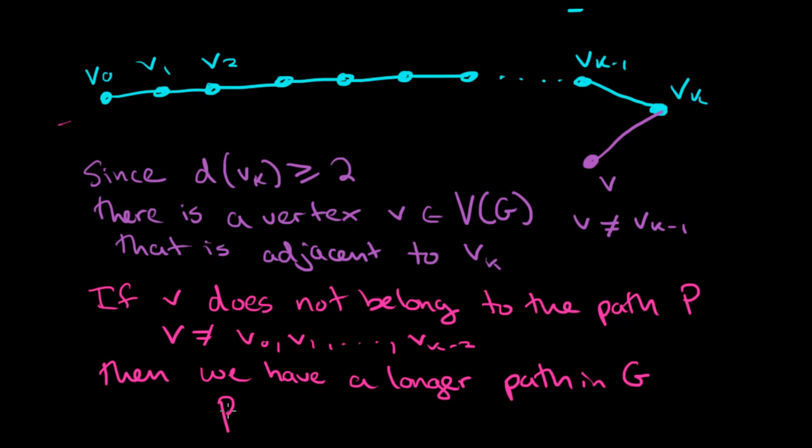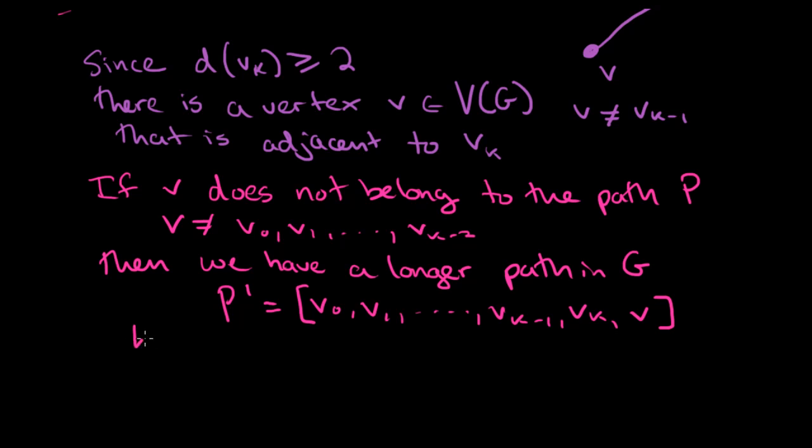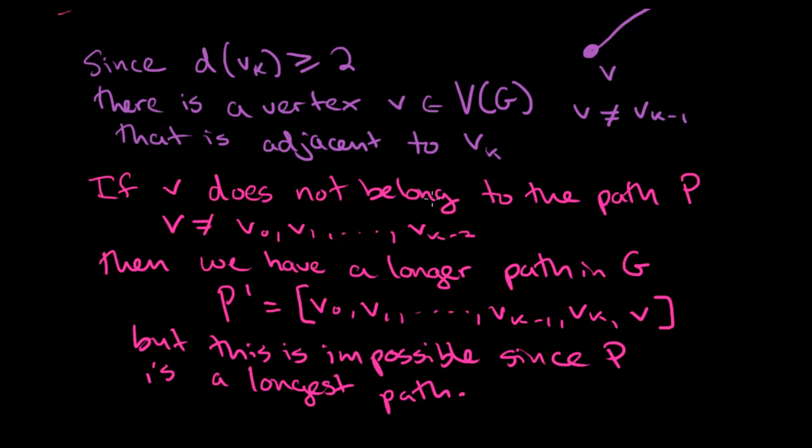Namely, let's call this path P prime. It's the path that goes from V0, V1, all the way up to Vk minus 1, Vk, and then to V. And that is a longer path. But this is impossible. But this is impossible since P is a longest path. Well, this part is impossible then.